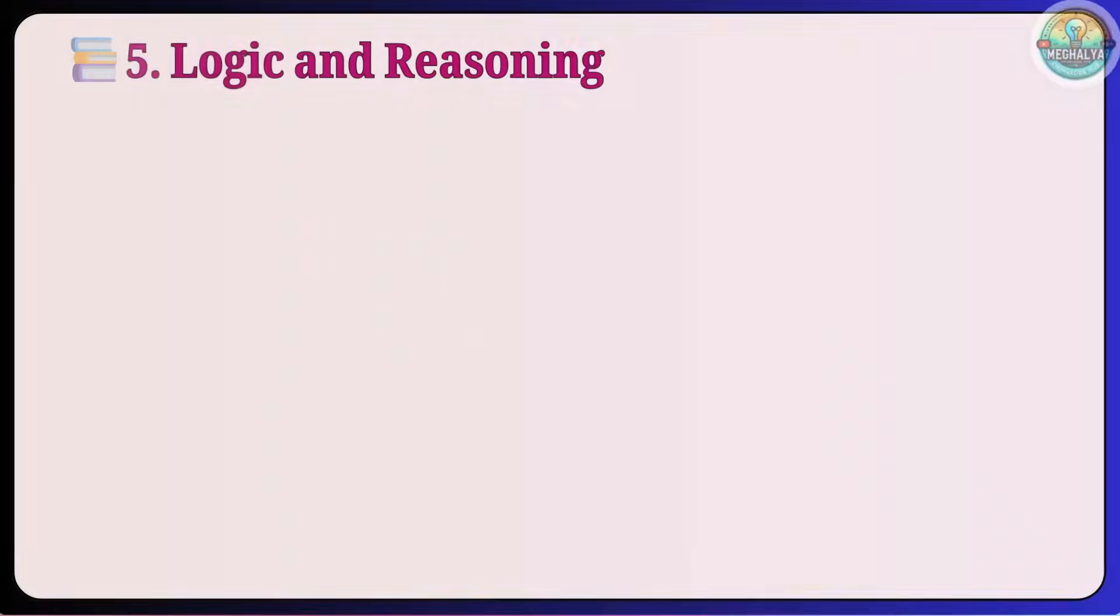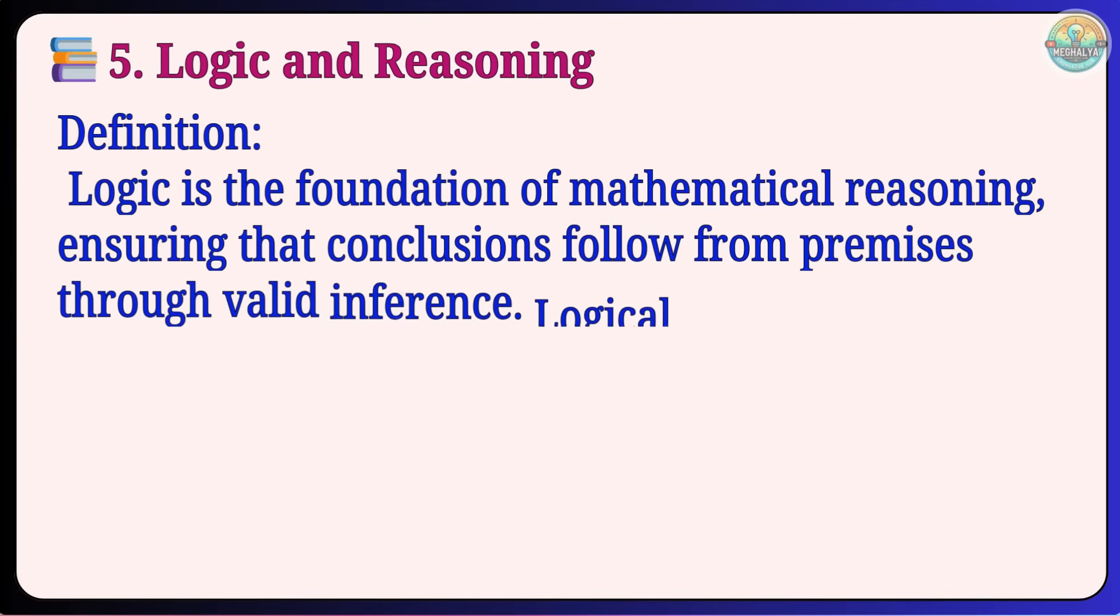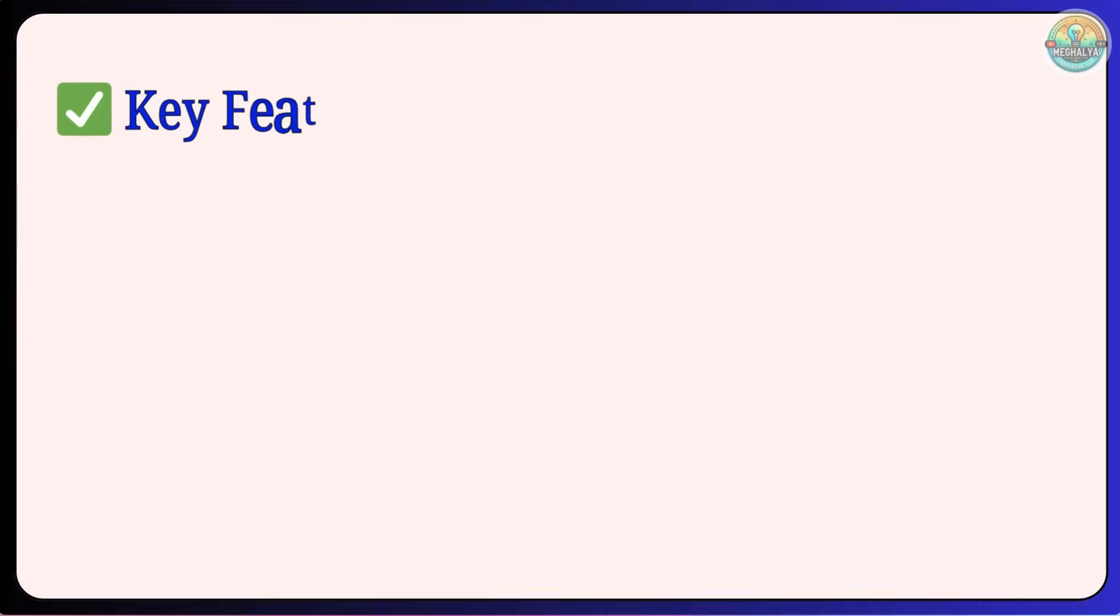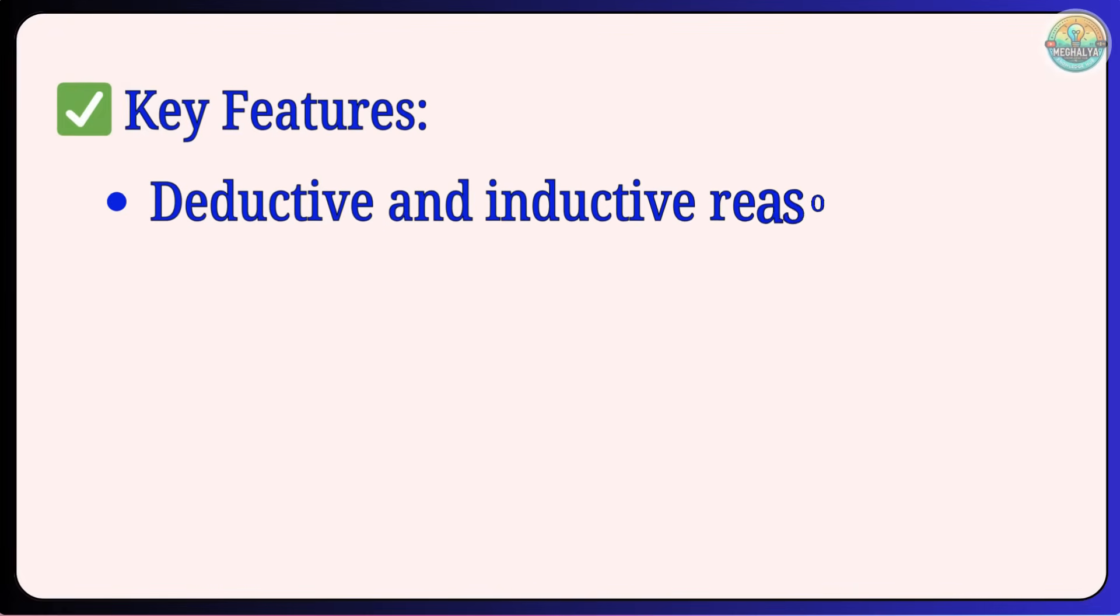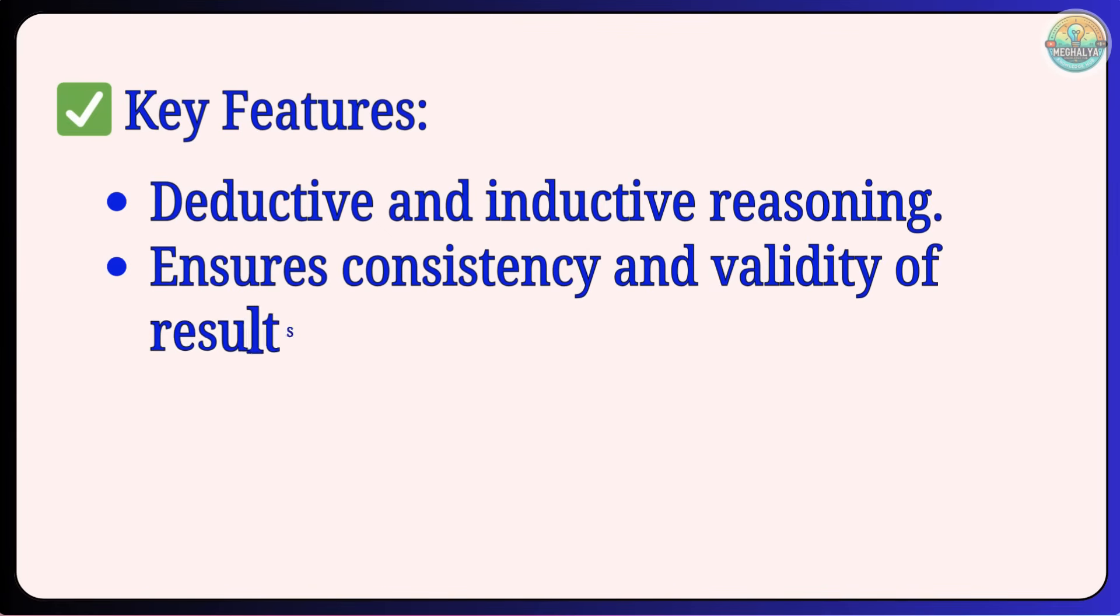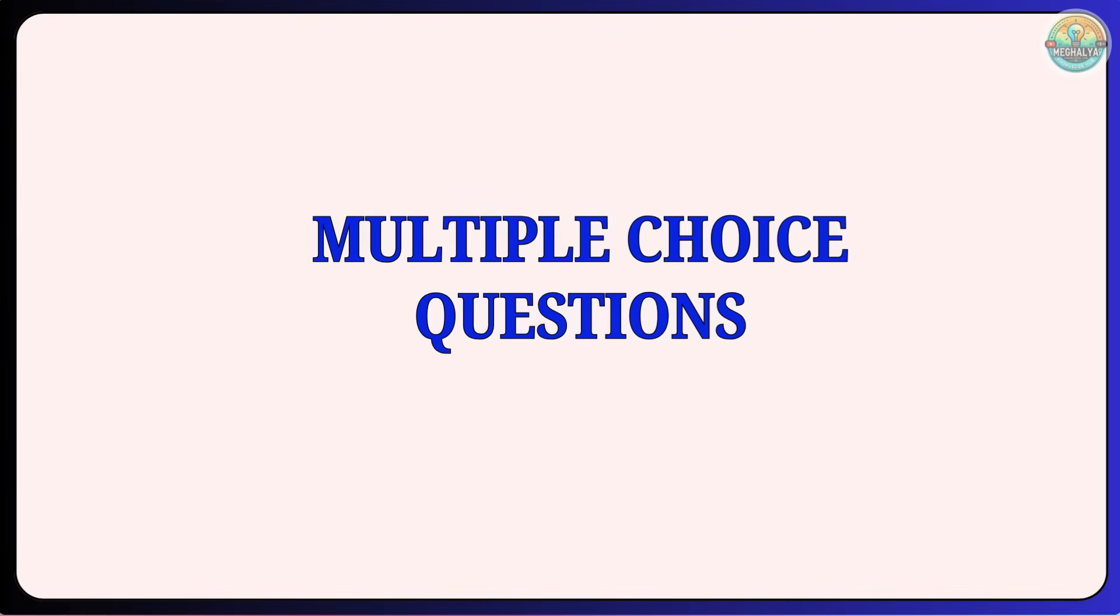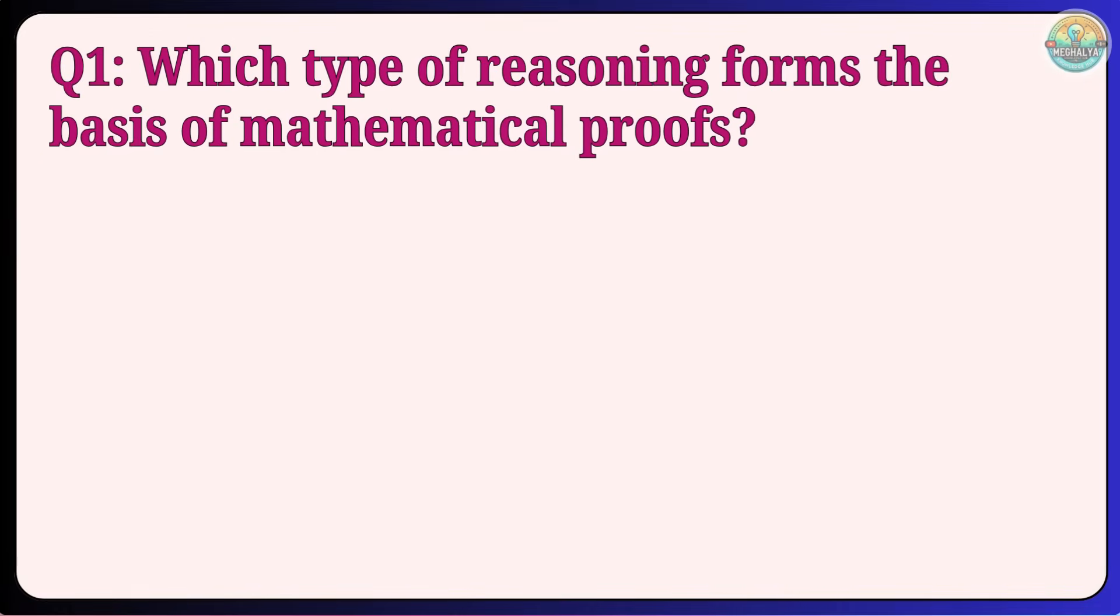5. Logic and reasoning. Logic is the foundation of mathematical reasoning, ensuring that conclusions follow from premises through valid inference. Logical reasoning ensures the correctness of mathematical proofs and results. Example: Proofs in geometry use deductive reasoning to establish theorems. Key features: Deductive and inductive reasoning; Ensures consistency and validity of results; Develops critical thinking and analytical skills. Multiple choice questions.